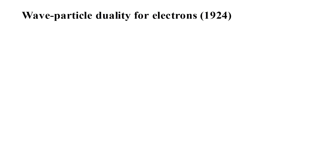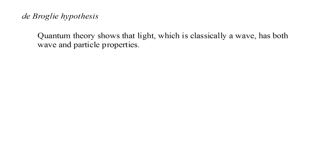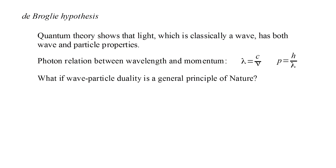That breakthrough came in 1924 when the concept of wave-particle duality was applied to the electron by Louis de Broglie. De Broglie's hypothesis was this: Quantum theory had shown that light, which is classically a wave, has both wave and particle properties. Specifically, if the wavelength is lambda, then photons of light have a momentum equal to Planck's constant over lambda. De Broglie suggested that wave-particle duality might be a general principle of nature. Therefore, an electron, which is classically a particle with momentum p equals mass times velocity, should also have an associated wavelength given by Planck's constant over momentum.